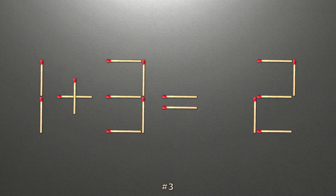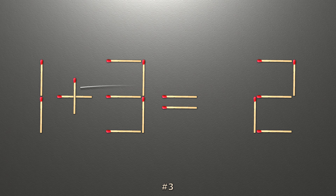To do this, all we need to do is move this match right here. Now when we check the condition, 1 minus 3 is minus 2, and minus 2 equals minus 2. Our equality is now correct.